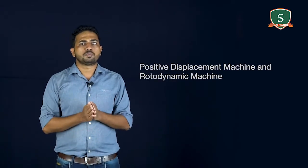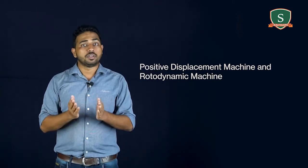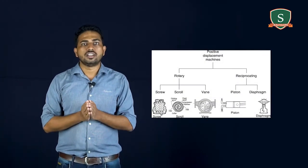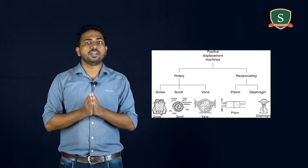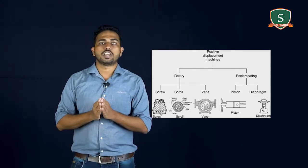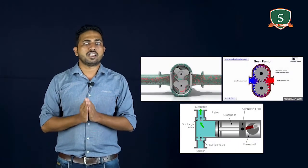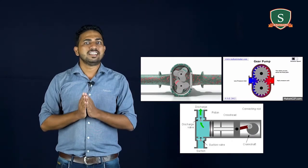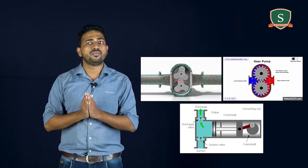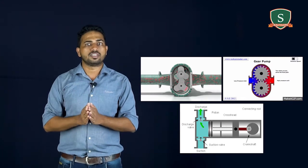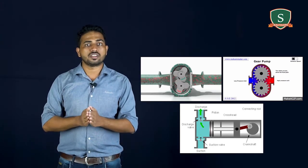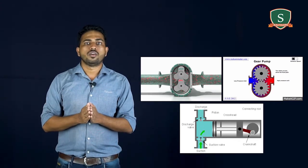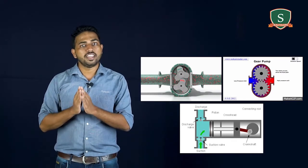Now another topic, very important topic in turbo machine: positive displacement machine and rotor dynamic machine. The machines whose functioning depends essentially on the change of volume of certain amount of fluid within the machine are known as positive displacement machines. The word positive displacement comes from the fact that there is a physical displacement of the boundary of the certain fluid mass as a closed system. This principle is utilized in practice by the reciprocating motion of the piston within the cylinder while entrapping a certain amount of fluid in it.